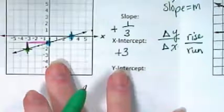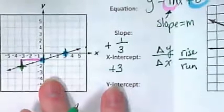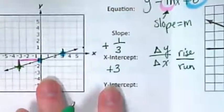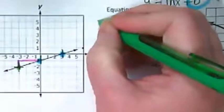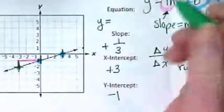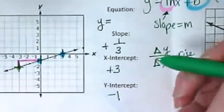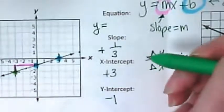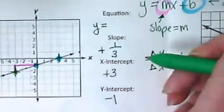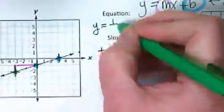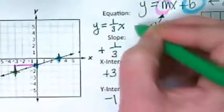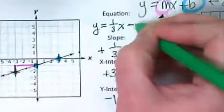That means that I can write this equation as y equals - remember the equation is y equals mx plus b, m is the slope, b is the y-intercept, right? I can write it as one third x minus one.